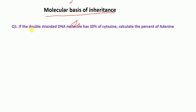The first question is: if a double-stranded DNA molecule has 30 percent cytosine, calculate the percent of adenine. To solve this problem we have to apply Chargaff's rule.